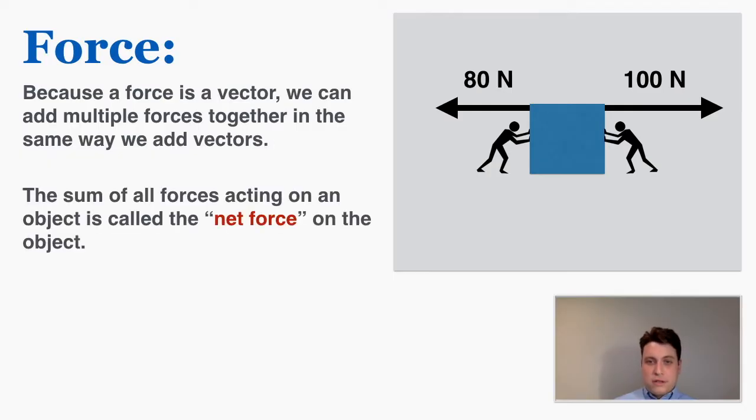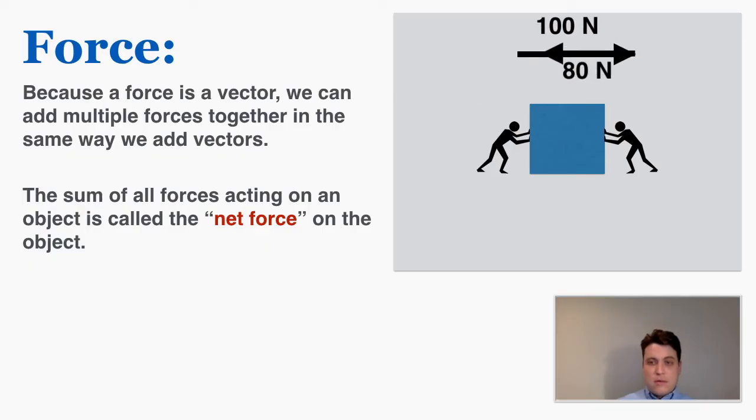This is one of the most important ideas in physics: the net overall force applying on the object. A net force is the sum of all the force vectors acting on the object. Here the net force would be 100 minus 80, because 80 is working against that 100, which would be 20 Newtons to the right.